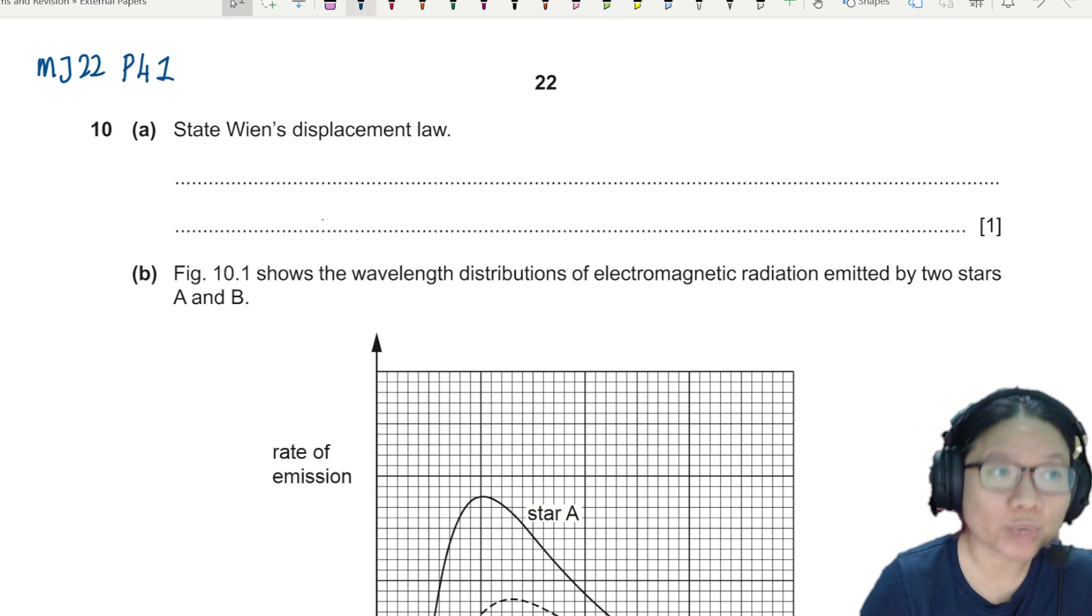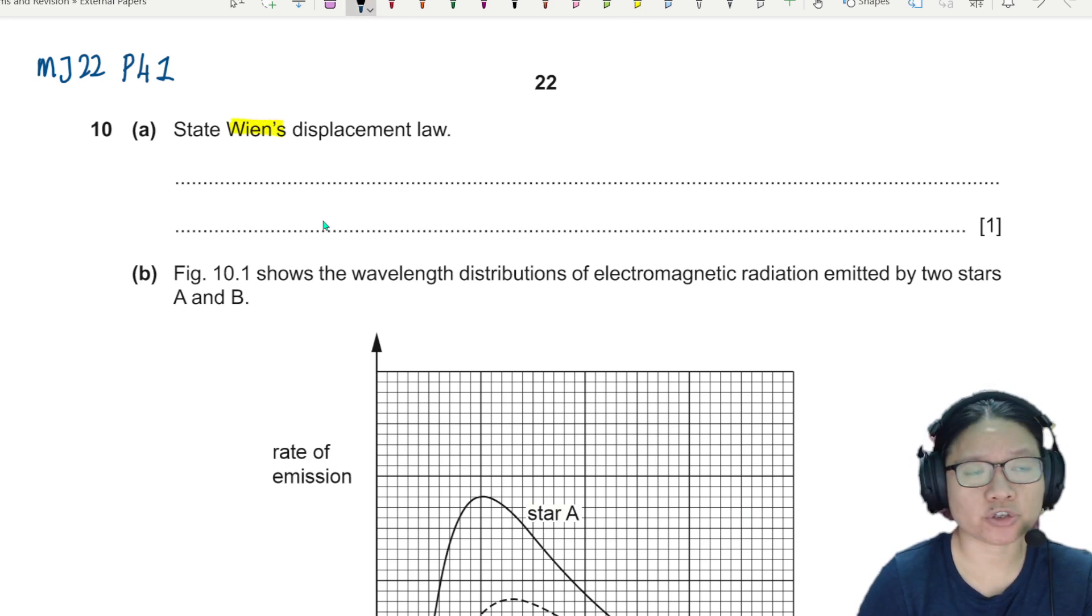So let's define Wien's displacement law first. This displacement law has something to do with the surface temperature. When we write this in symbol form, it says that lambda max is inversely proportional to 1 over T. But there are some details that you should include when you are trying to state the law.